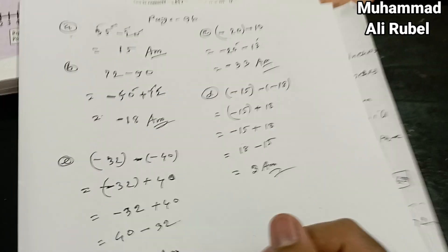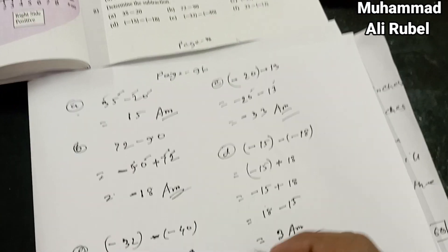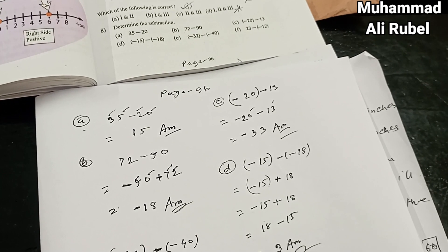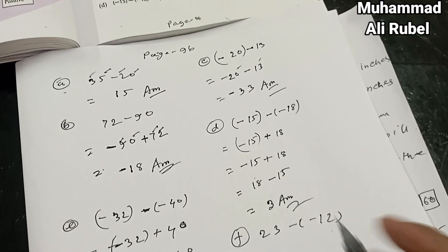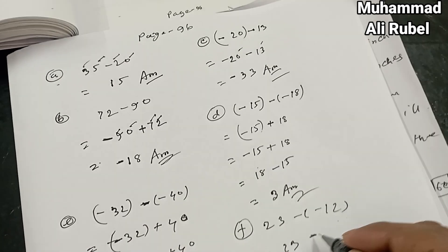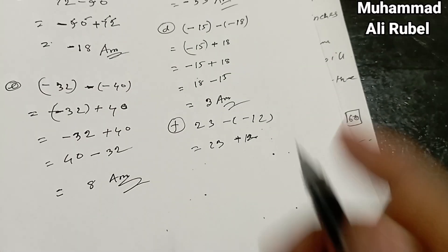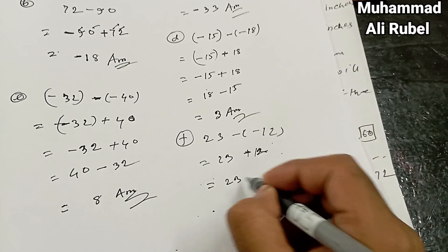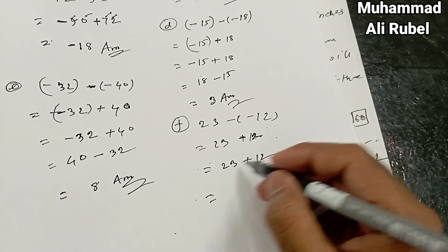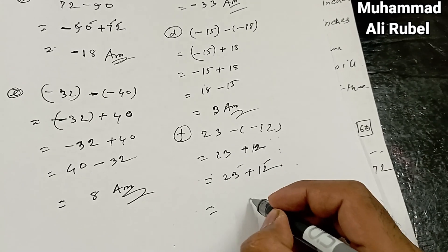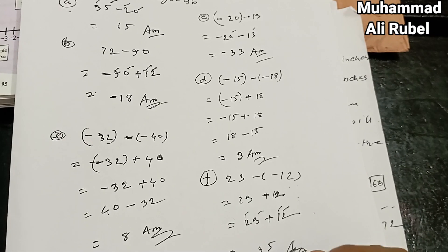The answer is 8. After that, we're going to solve number (f). F is 23 minus negative 12. At first we solve the brackets. 23 minus minus is plus. It's plus, both are positive numbers, so we add both numbers: 2 and 3 equals 5, 1 and 2 equals 3. That is the answer, 35.